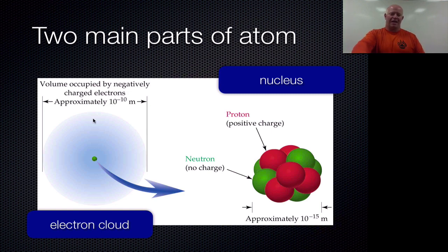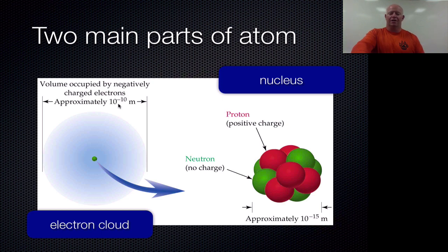The size of the actual atom itself is around 10 to the negative 10th meters — so we're talking about a tenth of a nanometer, a tiny, tiny size. However, the size of the nucleus is 10 to the negative 15th meters, so you're off by a factor of 100,000. If you wanted to draw the atom, the dot on the inside would have to be 100,000 times smaller than the diameter of the cloud.